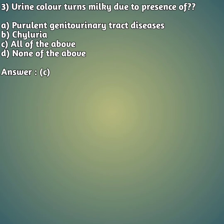Third question: urine color turns milky due to the presence of what? Normally urine is pale yellow, but if it turns milky, what is the condition? Option A: pyuria or genitourinary tract diseases, option B: chyluria, option C: all of the above, option D: none of the above. The right answer is C — all of the above. Because of both conditions the urine color turns milky.